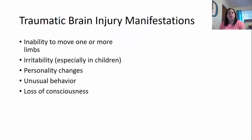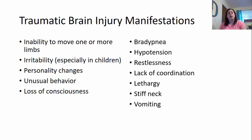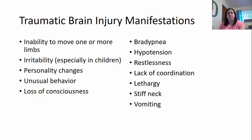Inability to move one or more limbs, irritability especially in children, personality changes, unusual behaviors, and loss of consciousness. They could also have bradypnea — brady means slow, pnea means breathing. Hypotension where their blood pressure is low, restlessness, lack of coordination, lethargy, stiff neck, and even vomiting. These are all different types of manifestations that traumatic brain injuries can have.